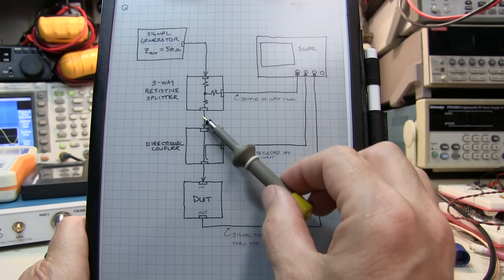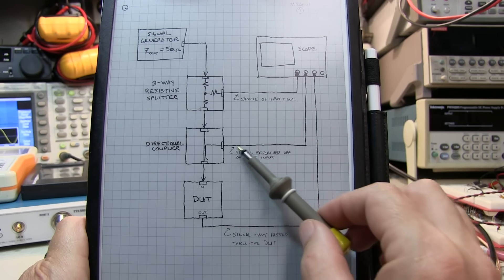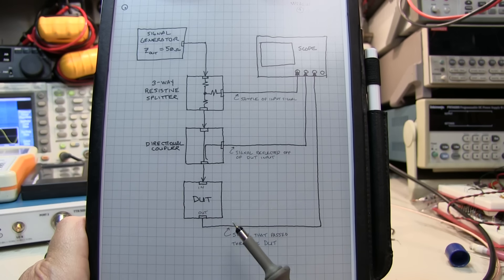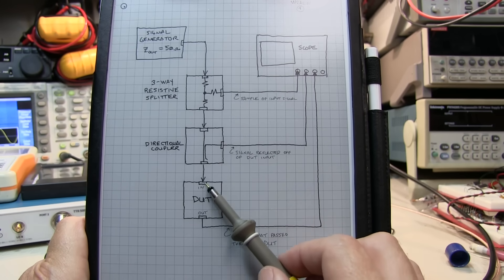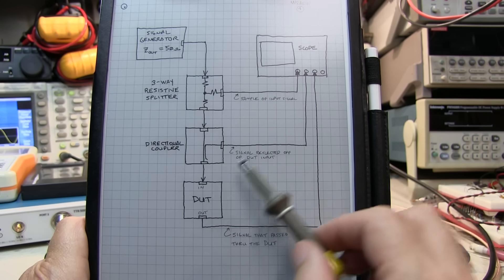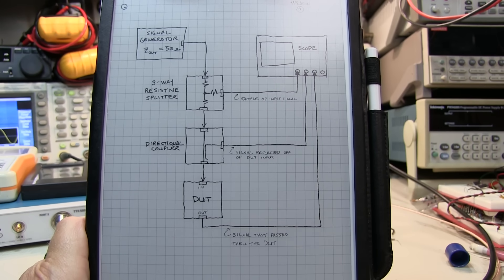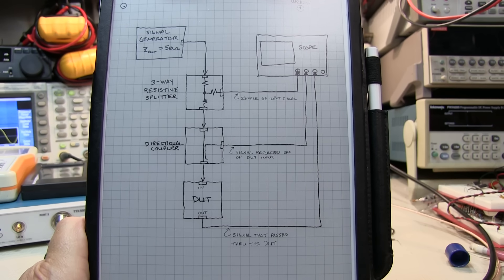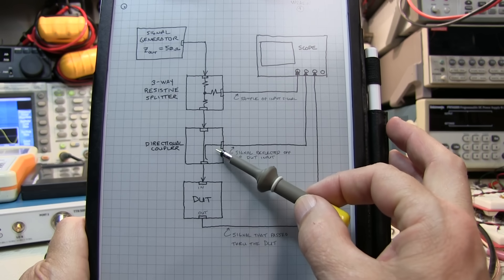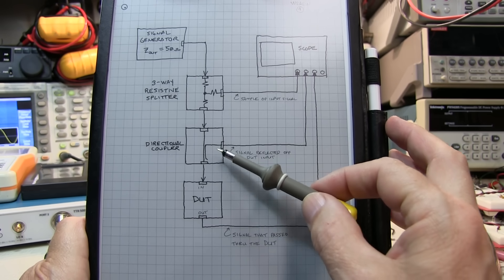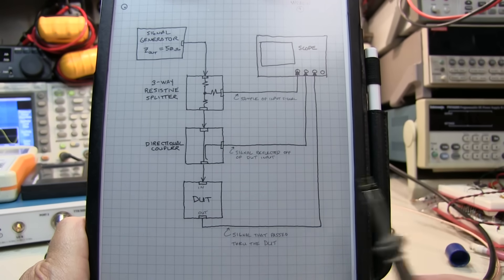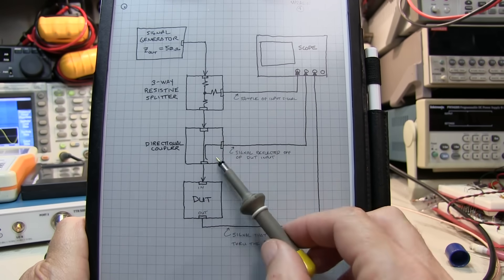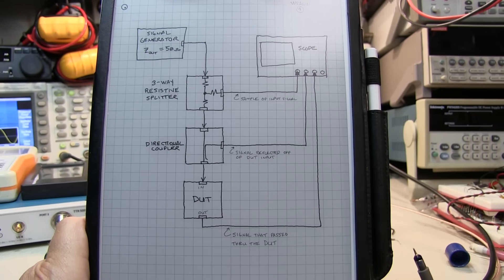I've hooked up the directional coupler essentially backwards, meaning the input is at this end. So any signal that gets reflected off of the device under test port will get coupled into the coupled port and up to channel 2. If the signal is going through in the forward direction, it effectively doesn't get coupled much to that port. This allows us to measure the signal coming back off of the device under test when the impedances don't match. The output of the DUT is going into channel 3 in case we want to look at transmission properties.